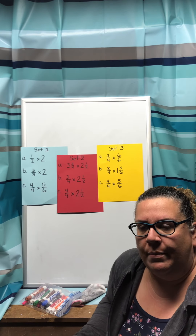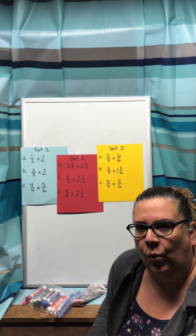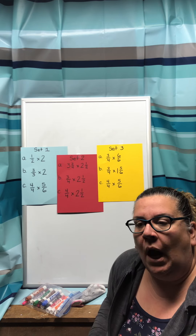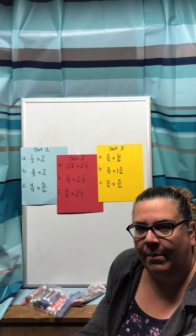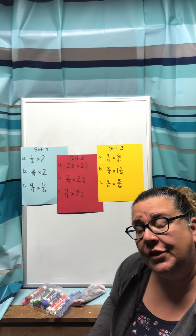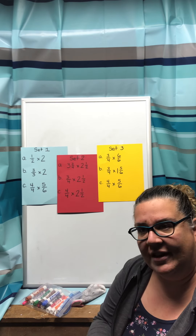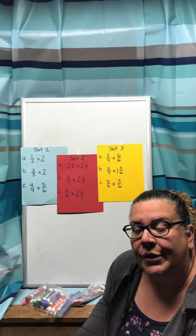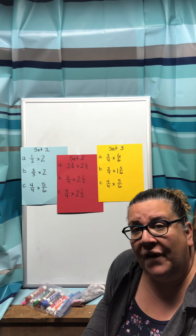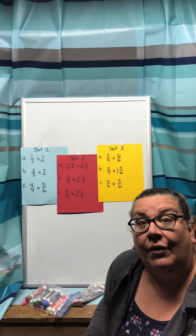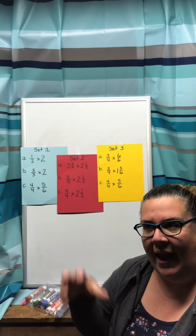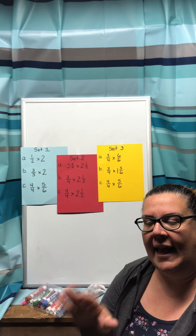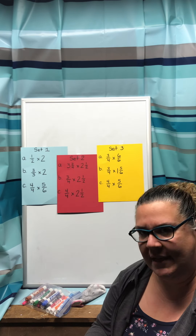The last couple of lessons we have done mixed numbers — either one mixed number times a regular fraction, or a mixed number times a mixed number. We either took those mixed numbers and turned them into improper fractions first and then multiplied across, taking care of our simplifying when needed, or in the last lesson, because we had two mixed numbers, we either did both as improper fractions or we did the area model. We broke each fraction into a whole number and a fraction, had our four boxes, and knew we had to do four pieces of multiplication to get the answer.